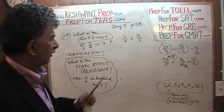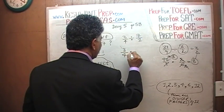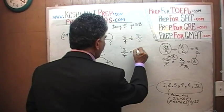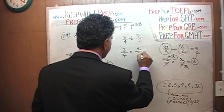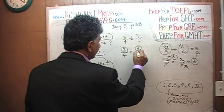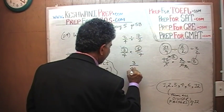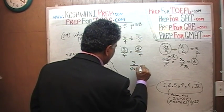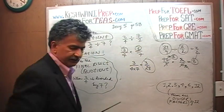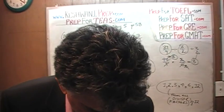Applying that process here: 3/4 divided by 7 over 1 — we multiply by the reciprocal, so 7 over 1 becomes 1 over 7. So we have 3/4 times 1/7. Three times 1 is 3, and 4 times 7 is 28. Our final answer is 3 over 28.